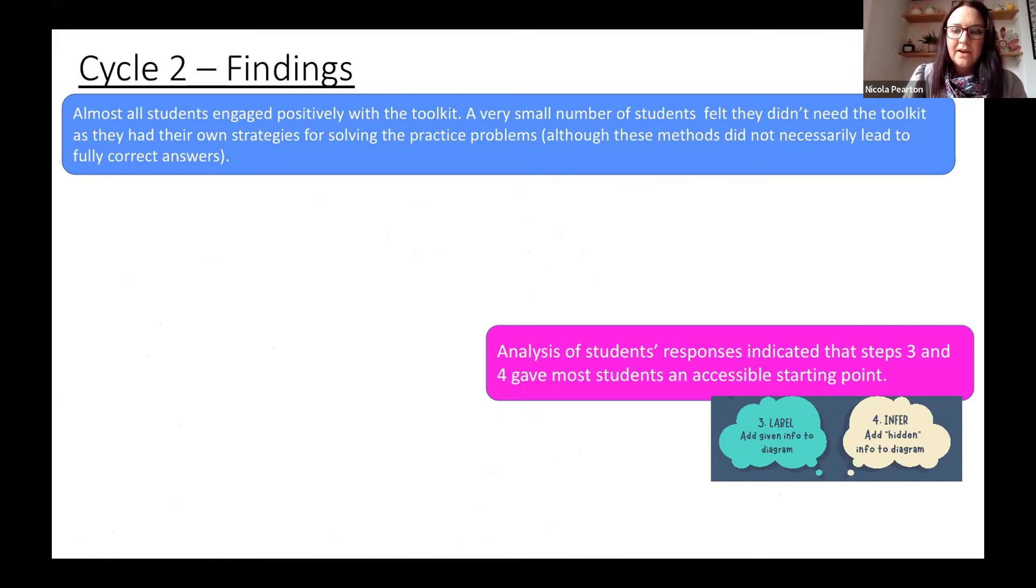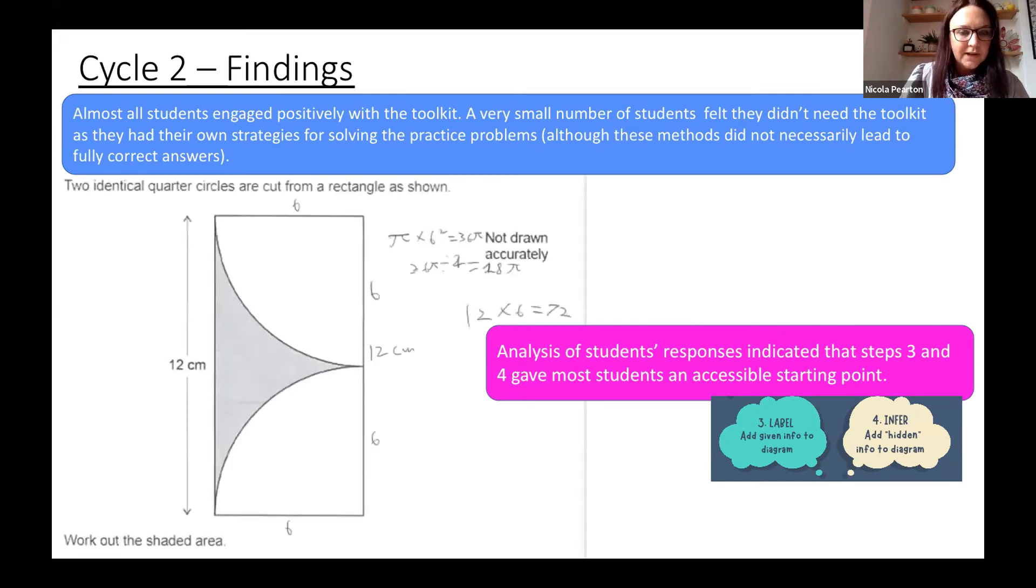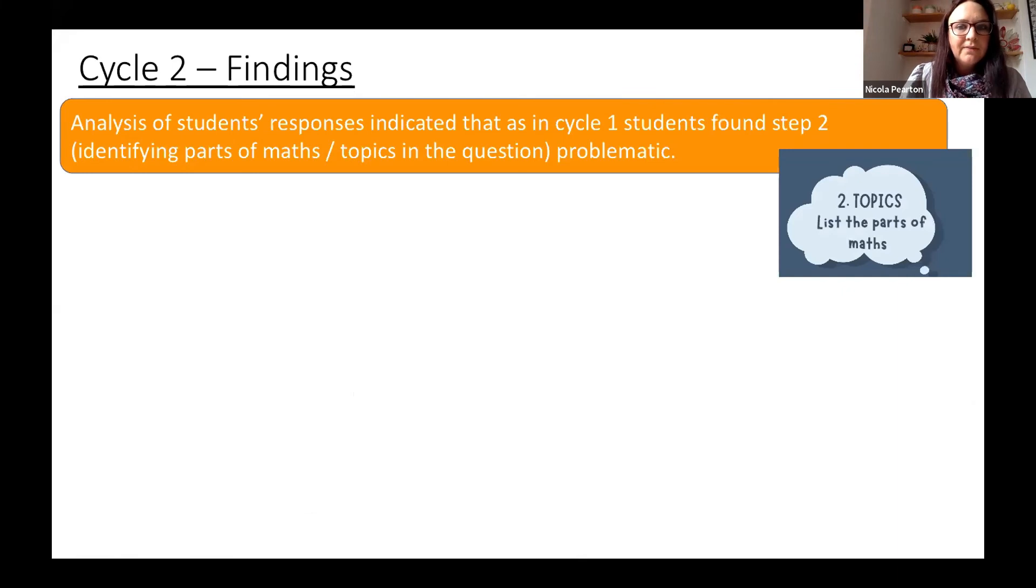What we found was that when we looked at their answers and attempts, the most useful thing was steps 3 and 4—that kind of gave them the best entry to the question. Just a very quick example: with this question, if they'd done that, the left-hand side was 12, and then they elicited the right-hand side was 12, and that was the diameter. They got the radius and then they were able to substitute into a formula on quite a difficult question which may have previously been left out.